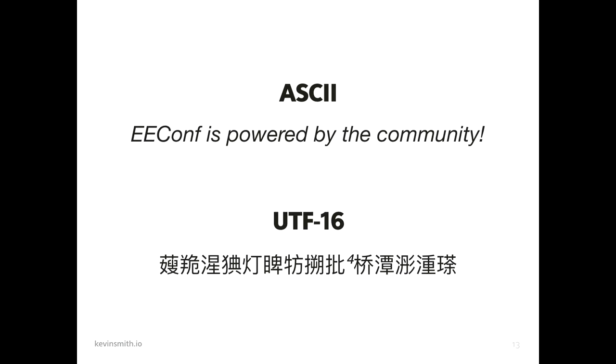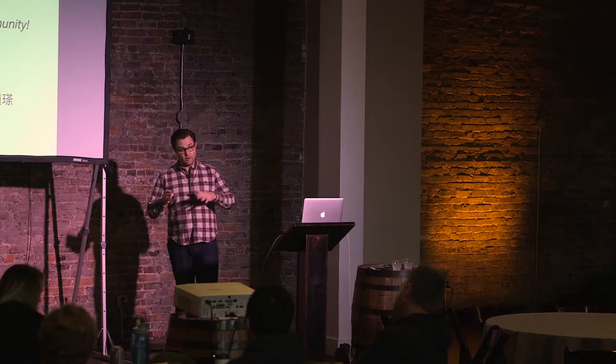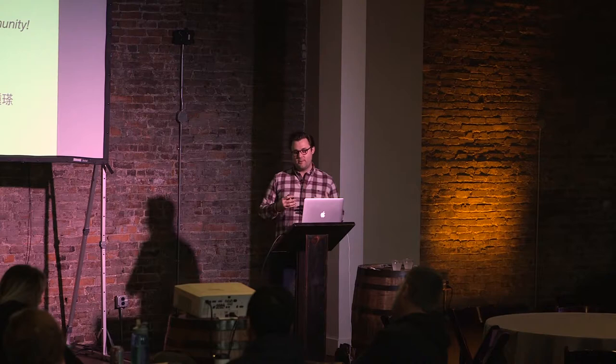ASCII is really powerful and popular — it gained prominence very quickly early in the '60s. But it doesn't include accented characters. It's only 128 characters, which covers uppercase and lowercase American English, space, backspace, some different control characters. But it doesn't include accented characters. So what do you do if you need to write text content in languages that use these characters?